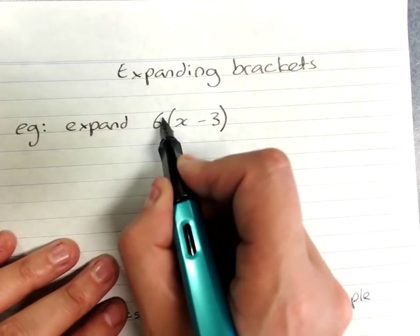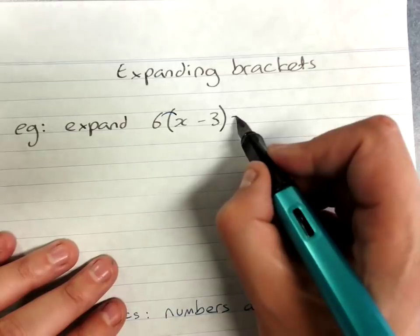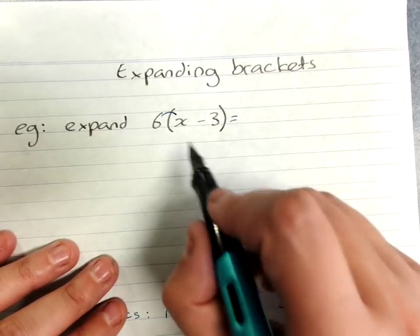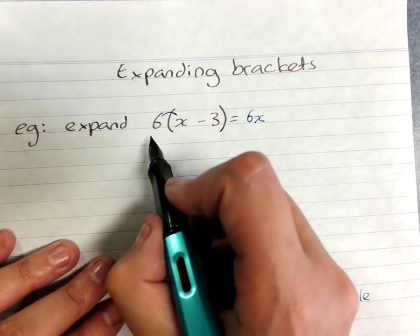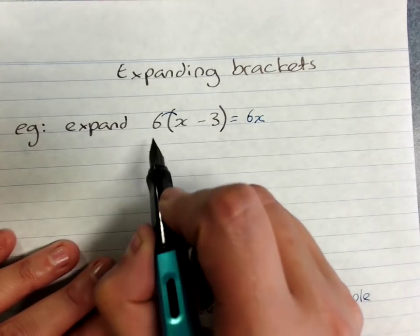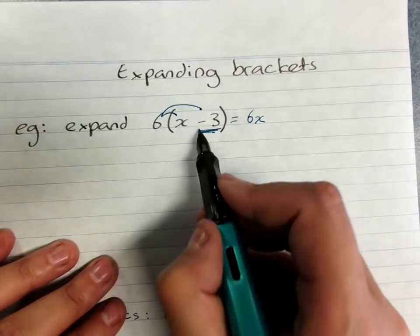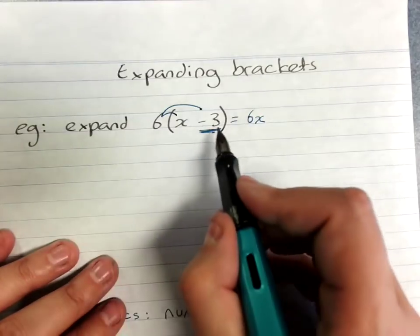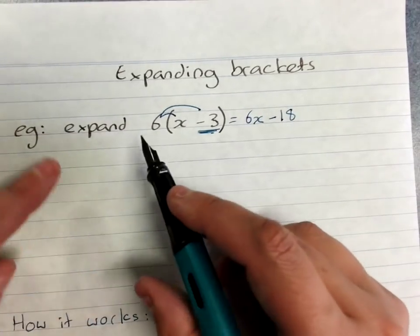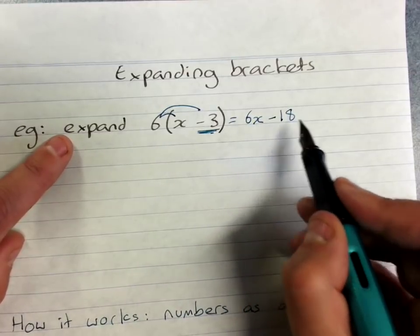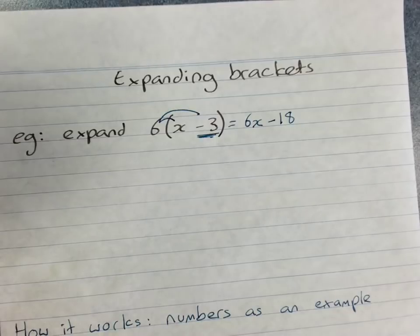It's a good idea to use a little set of arrows to say I'm going to do 6 times x, and you can go straight to the answer there because 6 times x is 6x. That's the thing outside times the first thing in the brackets. Then I'm going to do 6 times the whole thing there, negative 3. 6 times negative 3 is negative 18, so my simplified expanded answer is 6x minus 18. This is how expanding brackets works.